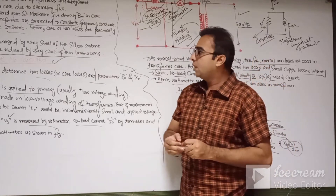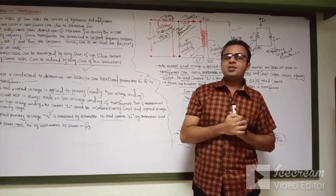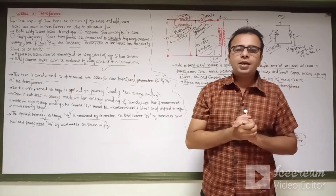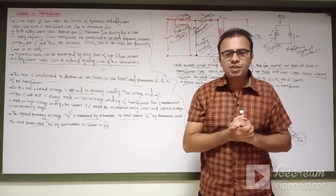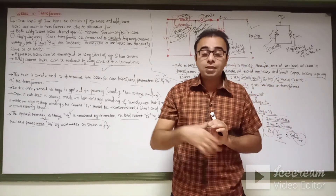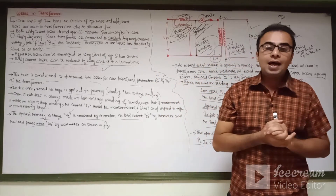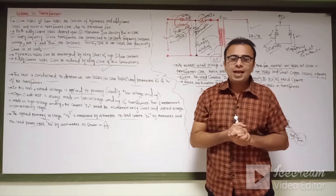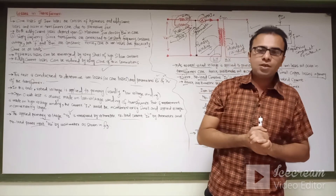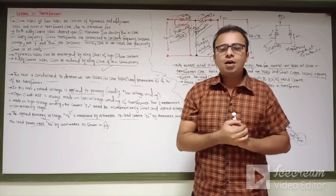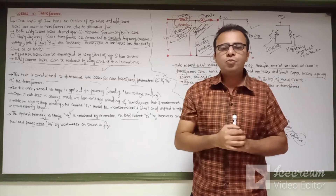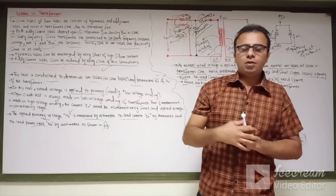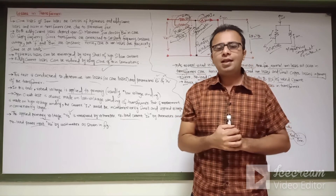To summarize: the open circuit test of the transformer is used to determine the iron losses or core losses in the transformer. This test is conducted on the low voltage winding, with the high voltage winding kept open circuited according to the circuit diagram. Please don't forget to subscribe to my YouTube channel and hit the bell icon to watch more videos related to electrical engineering and electrical machines. Thank you.